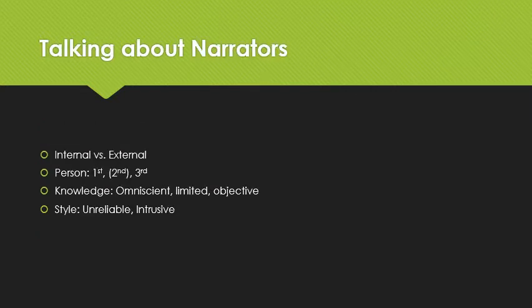When talking about narrators, there are a few features that we pay attention to. To give a basic overview, those features are: internal versus external narrators, the person of the narrator — whether it's first, second, or third — the level of knowledge of the narrator, whether it's omniscient, limited, or objective, and the level of trustworthiness or presence of the narrator.